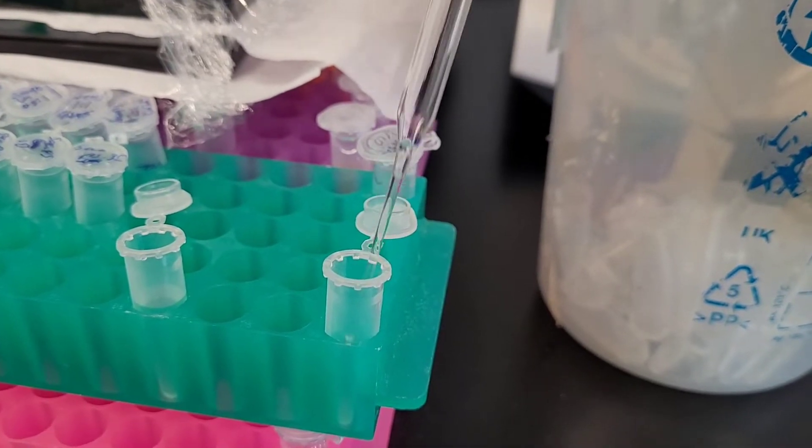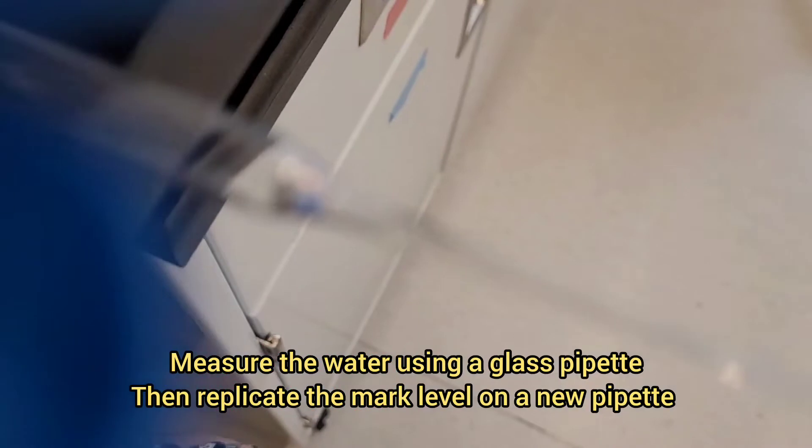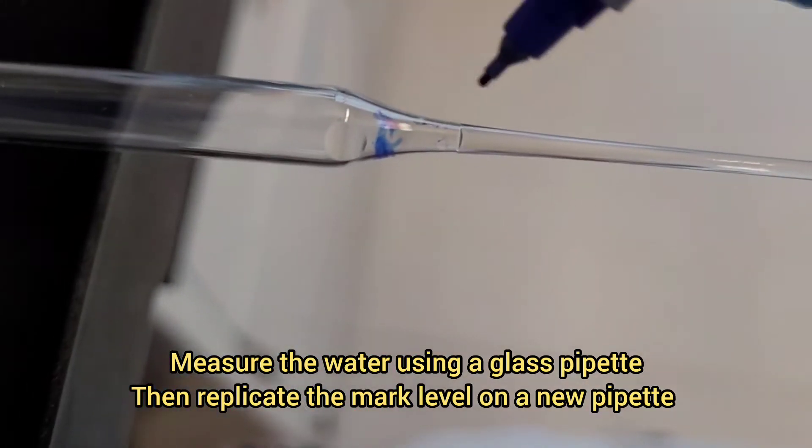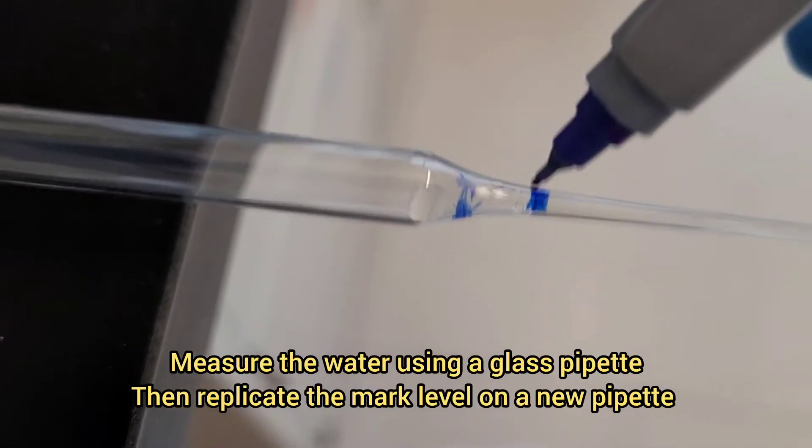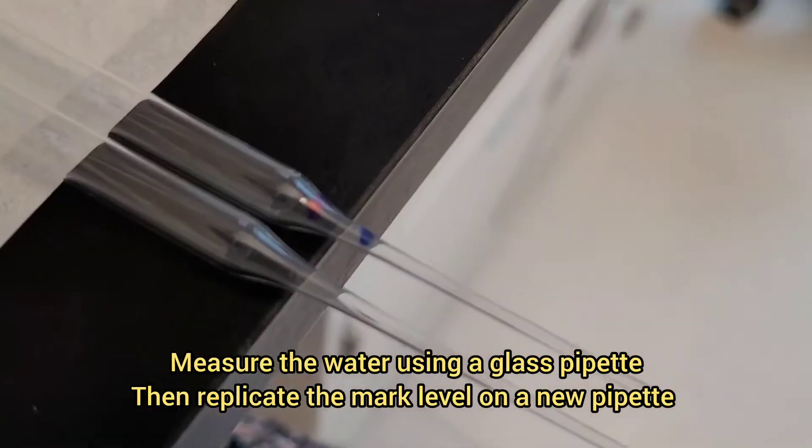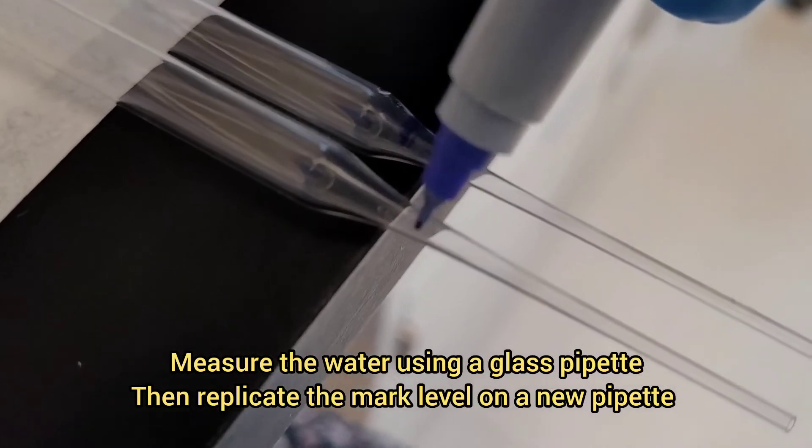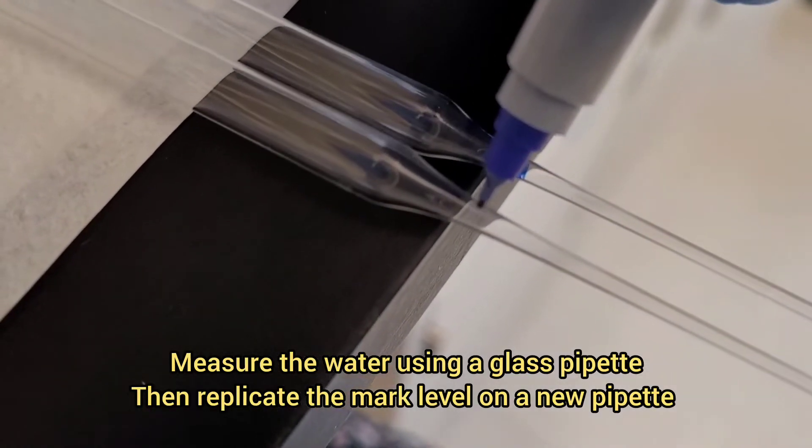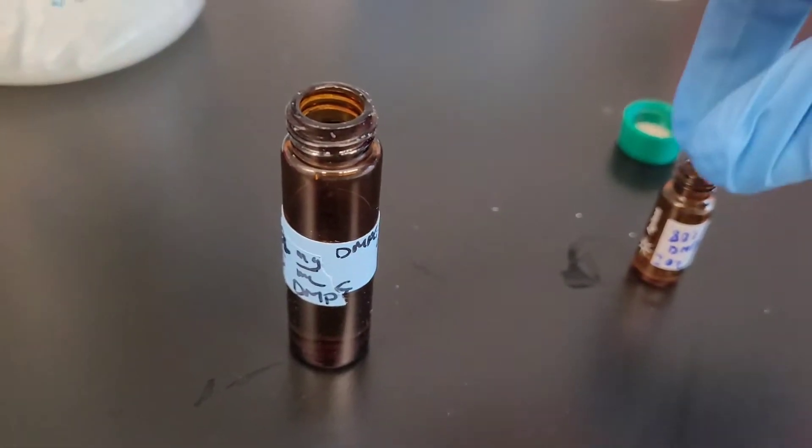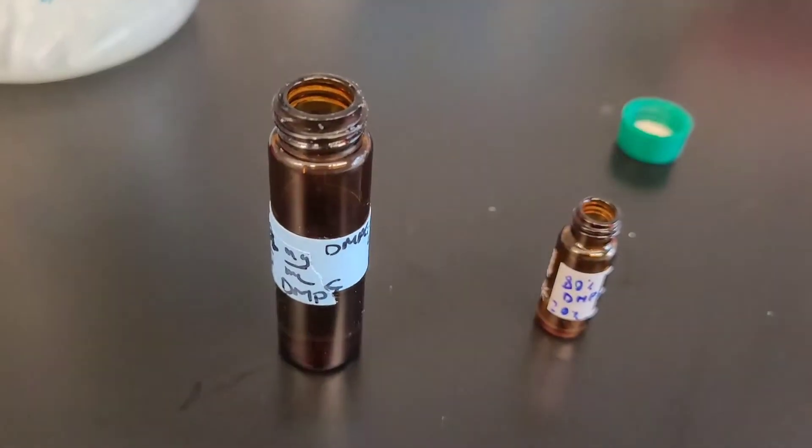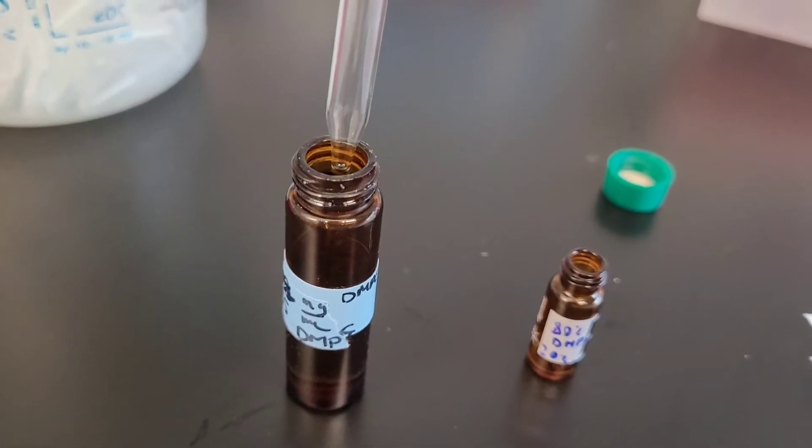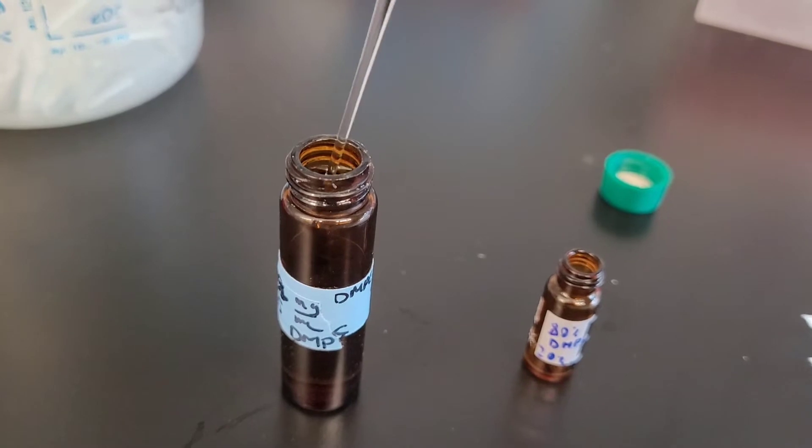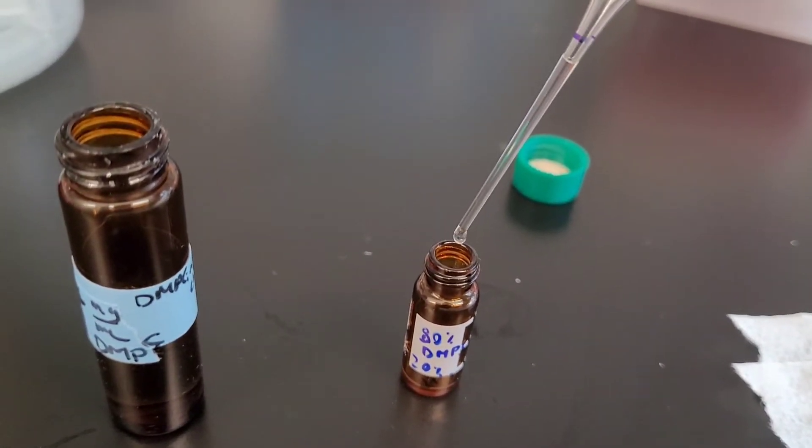Because it's difficult to measure accurately with glass pipettes, I first measure water with a plastic pipette and use a glass pipette to mark the µL volume. Then I match it with another glass pipette so I can measure the accurate volume from the stock solution. Here I'm measuring the DMPC to about 10 µL, and I already had 40 µL of the DMPS.